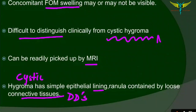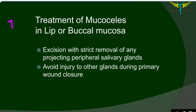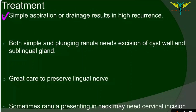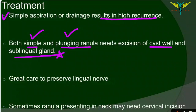For treatment, mucoceles in the lip or buccal mucosa are treated by excision with removal of any projecting peripheral salivary glands, avoiding injury to other glands during wound closure. Simple aspiration or drainage results in high recurrence. Both simple and plunging ranulas require excision of the cyst wall and also the sublingual gland. During surgery, caution must be taken to preserve the lingual nerve. Sometimes the plunging ranula may need a cervical incision.